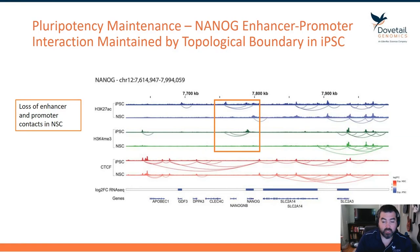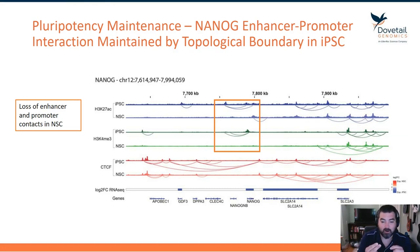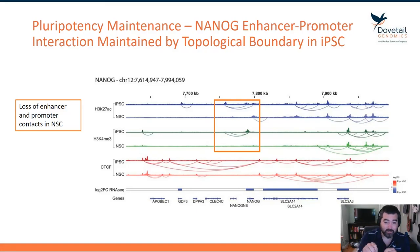This shows us that it's these particular enhancer marks. If we look at the top H3K27 acetylation track, we can see that there's an enhancer mark that has two arcs drawn over. And if we go down to the first green track, we see a promoter mark with two arcs hitting the spot where the enhancer lives.